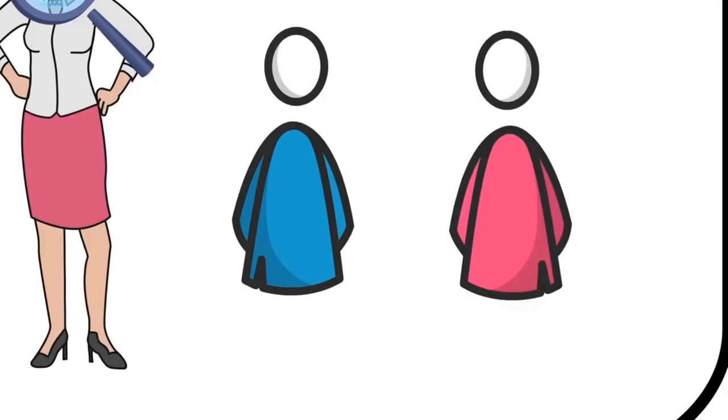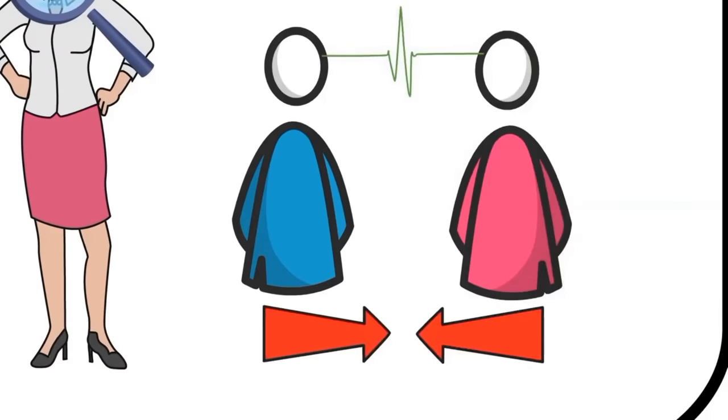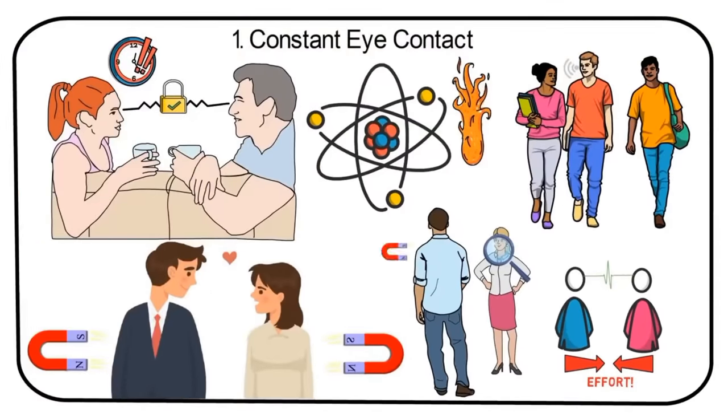This is one of the most basic signs of sexual attraction. We all know that making eye contact is polite, and so will normally make an effort with the people we meet, but if we're attracted to them, it suddenly isn't quite so much of an effort.